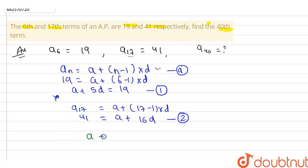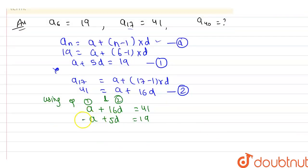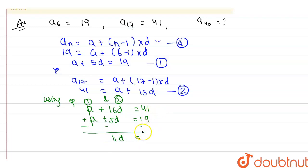Now using equations one and two: subtracting equation one (a + 5d = 19) from equation two (a + 16d = 41), the a terms cancel, leaving 16d − 5d = 11d, which equals 41 − 19 = 22.